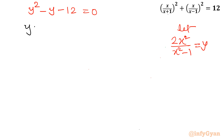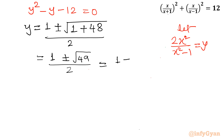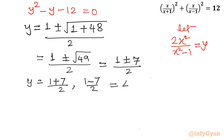Applying the quadratic formula: y = [−(−1) ± √((−1)² − 4·1·(−12))] / (2·1) = (1 ± √(1+48)) / 2 = (1 ± √49) / 2 = (1 ± 7) / 2. So y = (1+7)/2 = 8/2 = 4, or y = (1−7)/2 = −6/2 = −3.